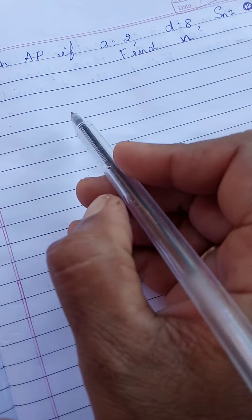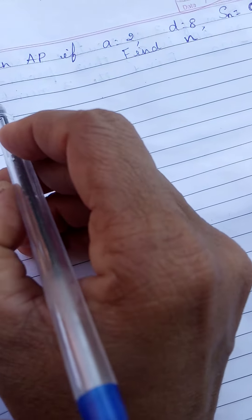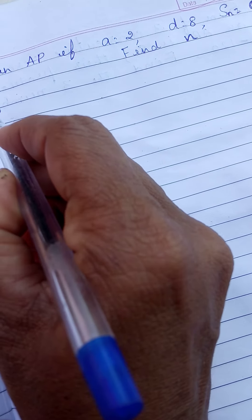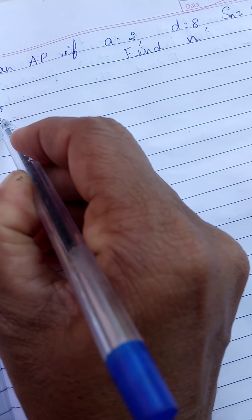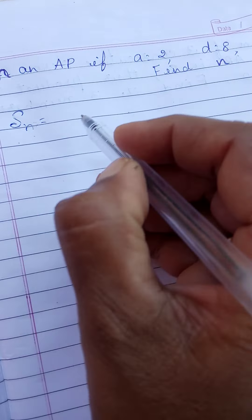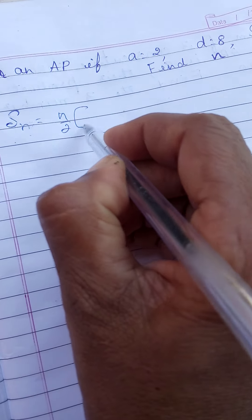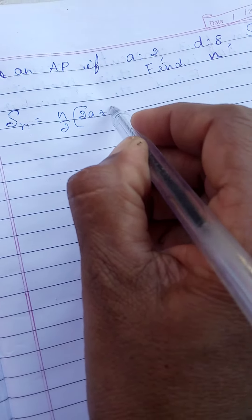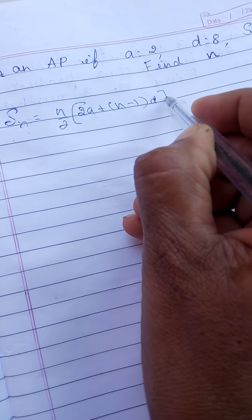n is the number of terms. First you should write the formula, Sn formula to find out the sum of the AP. Sn is equal to n by 2 into 2A plus n minus 1 into D.